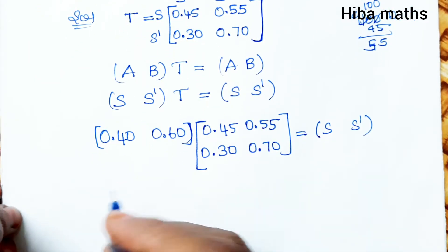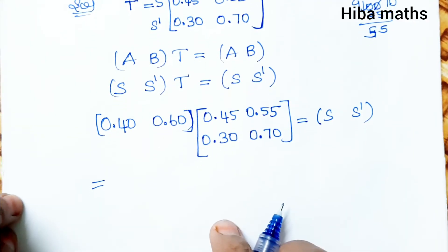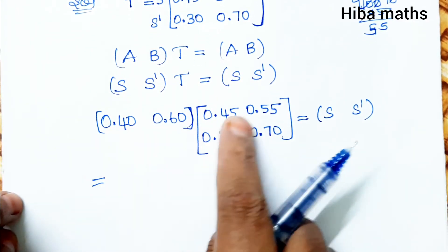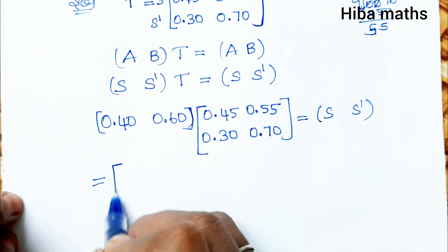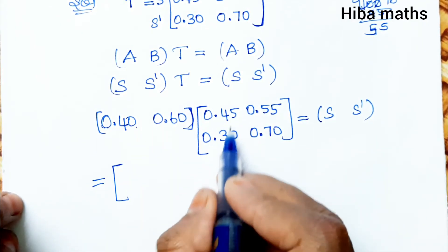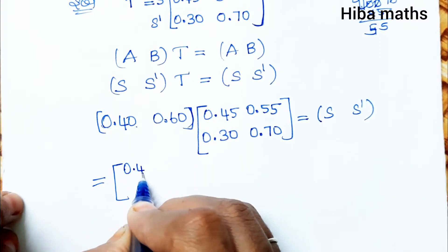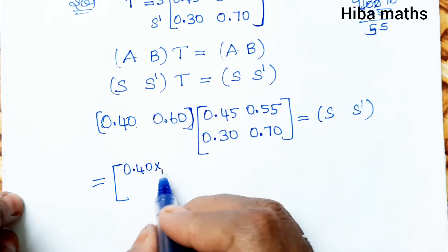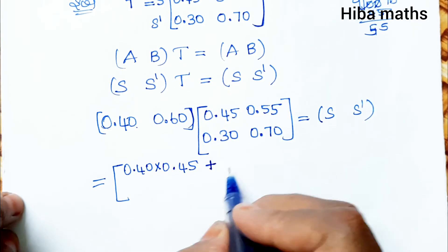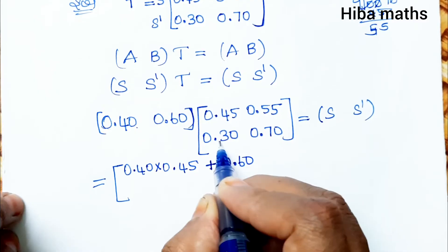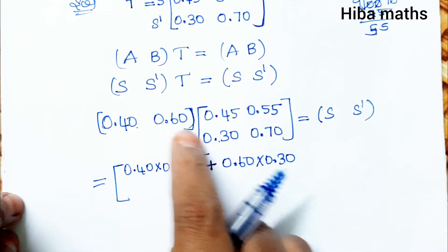Now we perform matrix multiplication. The current state vector is [0.40, 0.60]. We multiply: first row, first column: 0.40 into 0.45 plus 0.60 into 0.30. First row, second column: 0.40 into 0.55 plus 0.60 into 0.70.